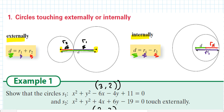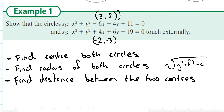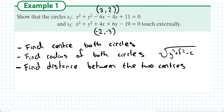So I'll show you now in an example. Show that circles S1 and S2 touch externally. First things first is always to find their centers. Remember the shortcut - half and change the sign. Half of minus 6 is minus 3, change the sign and you get 3. Half of minus 4 is minus 2, change the sign and you get 2.